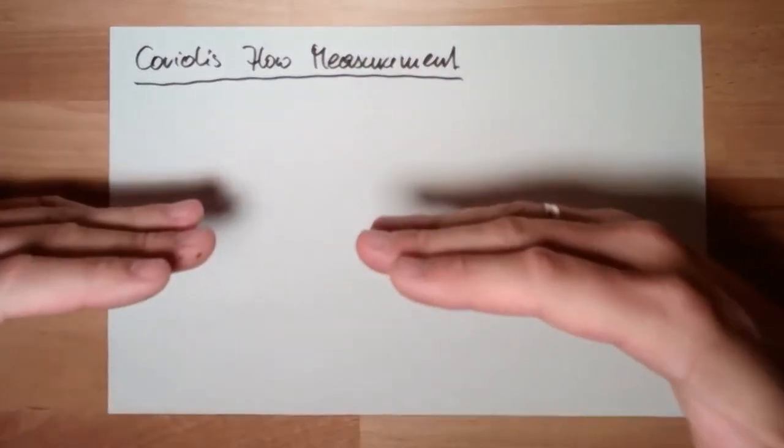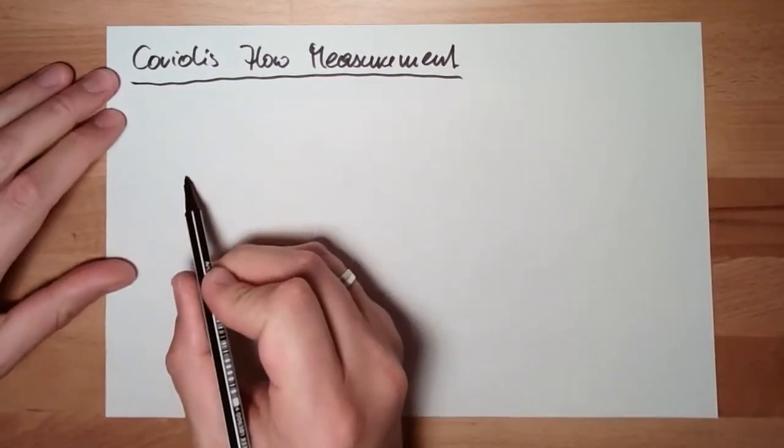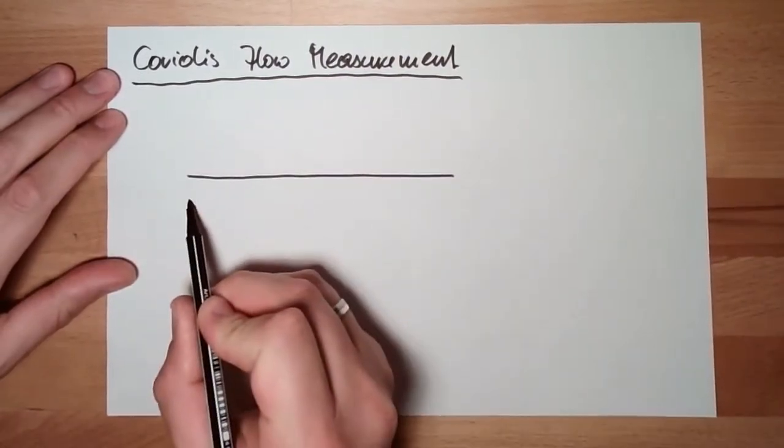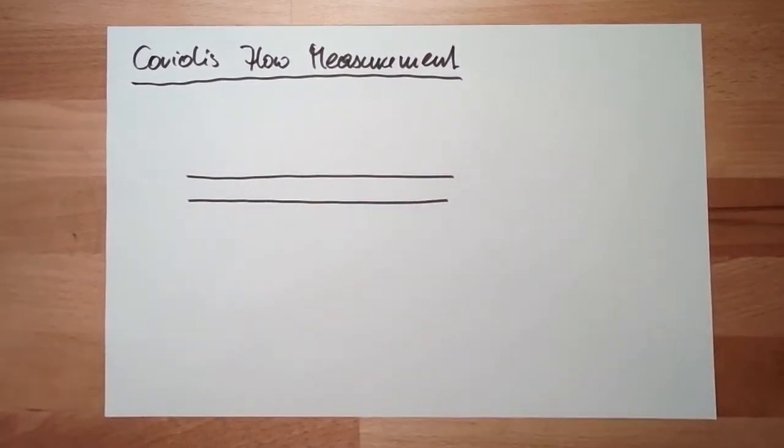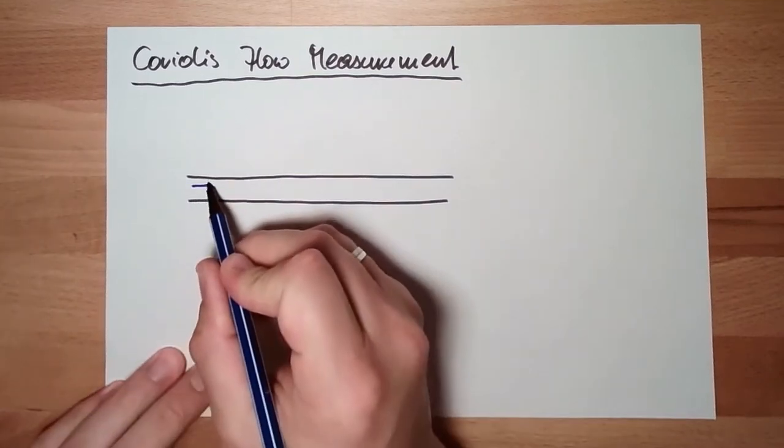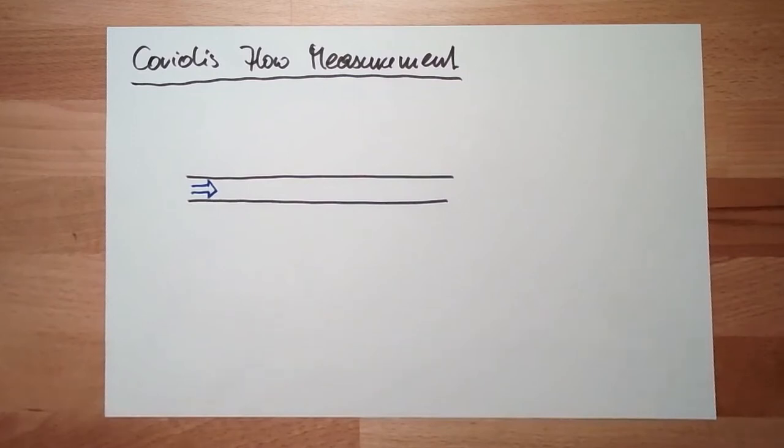We do have a tube again, a tube of course. This time a little bit more elastic tube. There is streaming something inside or not, and this we want to measure.